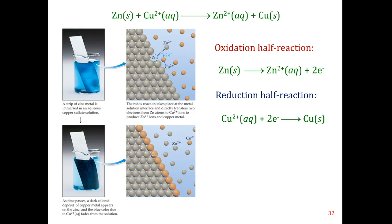Let's look at a basic system first. Here we have a basic redox reaction: zinc combining with copper to give us zinc 2+ and copper solid. Specifically, solid zinc combining with aqueous copper to give us aqueous zinc and solid copper. We've taken a piece of zinc and placed it in a copper 2+ solution.